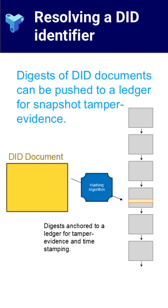Some DID methods combine these strategies. For instance, others may publish a digest of the DID document to a public blockchain rather than storing the full document on-chain. This approach offers tamper evidence without bloating the ledger while enabling off-chain storage and resolution.